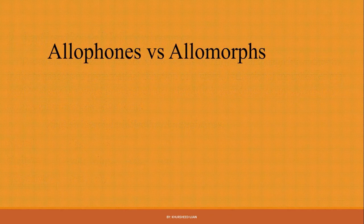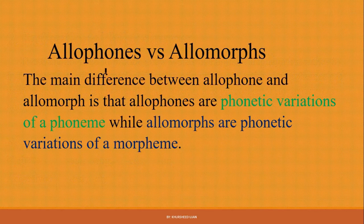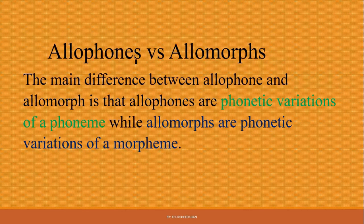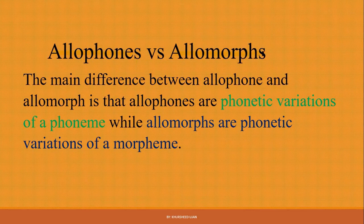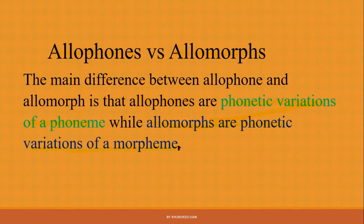Now students, we have learned about morphology, morphemes, and kinds of morphemes. Let's study about allophones versus allomorphs. We already learned about allophones in our previous class — if you want to learn about allophones, the link is given in the description box. Right now we are going to talk about allophones and allomorphs, what they are, and what the differences are between them.